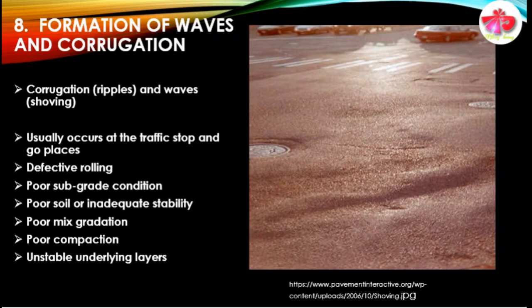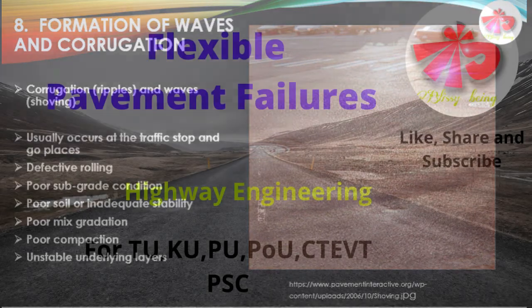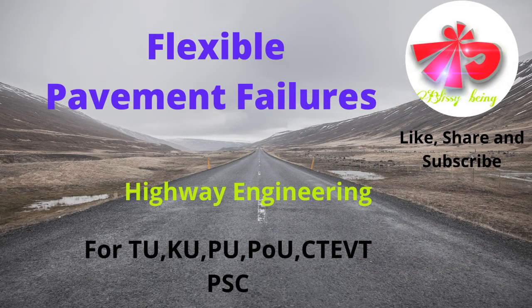The eighth failure pattern in the flexible pavement is the formation of waves and corrugation. These corrugations are also known as ripples, and waves are known as shoveings. They usually occur at traffic stop-and-go places and are mainly caused due to defective rolling, poor soil or subgrade conditions, inadequate stability, poor mix gradation, poor compaction, and unstable underlying layers.